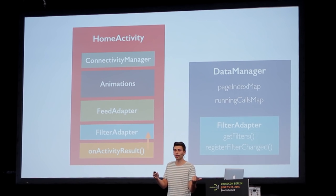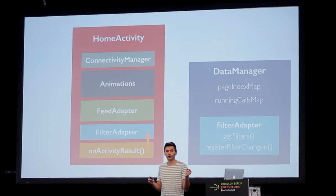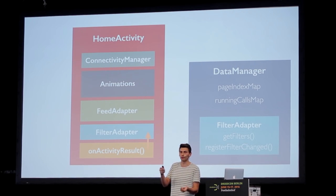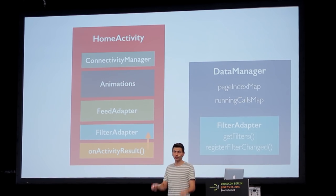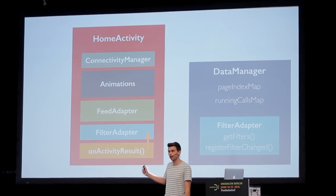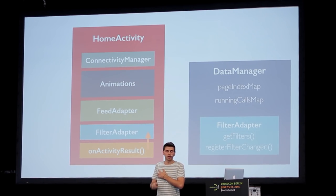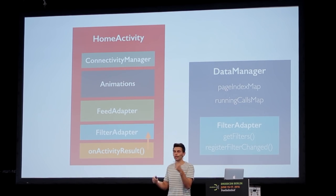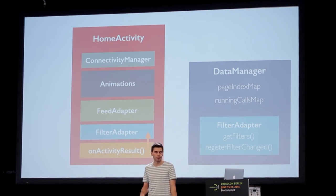The DataManager also contains a list of Retrofit calls stored in a HashMap, because it has to clean up those calls when the screen rotates. It also contains a page index for pagination — when you scroll down it loads the next pages from your sources. So the DataManager tracks which page it's on per source and is quite a huge class.